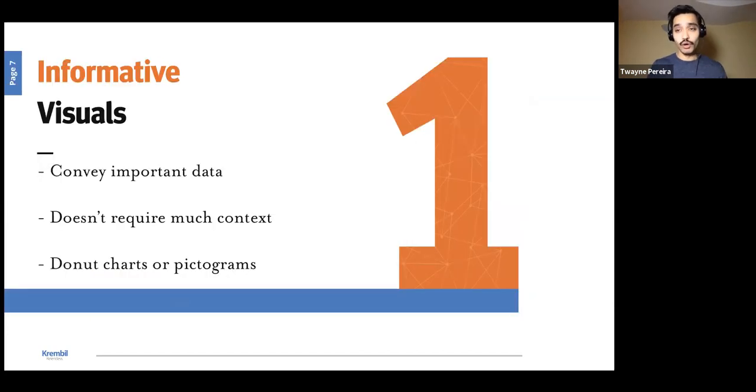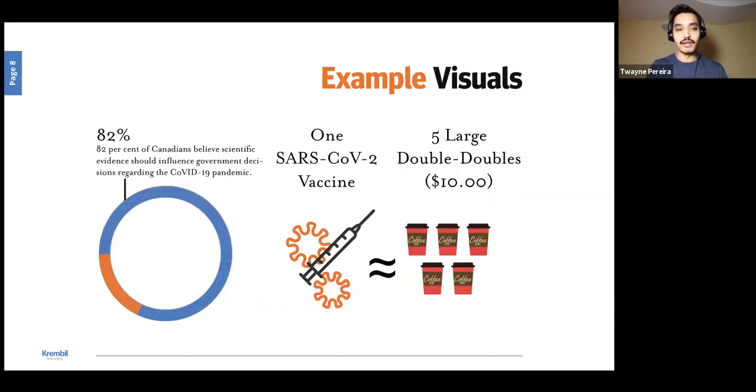This is not going to be an exhaustive list of all the types of visuals that we could create. But here are some examples to help you guide along, and to consider with what data you can use these visuals with. So the first one is informative visuals. These visuals really are used to convey important data, they don't require much context. So if someone doesn't know anything about a topic, they can sort of really understand what's going on. The simplest way to explain some of that data are in donut charts or pictograms. So an example of this would be something like this, a donut chart showing a percentage of something. In this case, I've got a graphic of the percentage of Canadians that believe scientific evidence should influence government decisions when it comes to COVID. That's easy to understand. We have an understanding of what the Canadian population believes with this graphic. And you don't need much context with that information.